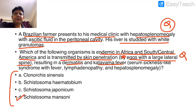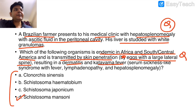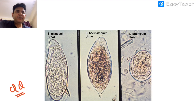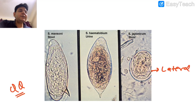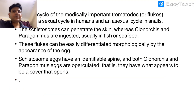The answer is Schistosoma mansoni, because mansoni has a lateral spine, which is the key hint. Two important features to remember: it leads to cercarial dermatitis and Katayama fever, which is a serum sickness-like syndrome with fever, lymphadenopathy, and hepatosplenomegaly. For egg identification: mansoni has a lateral spine, haematobium has a terminal spine, and japonicum has a lateral knob (rudimentary spine).